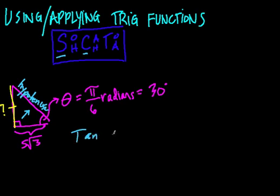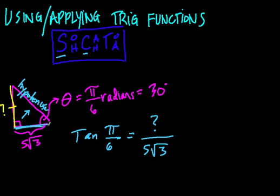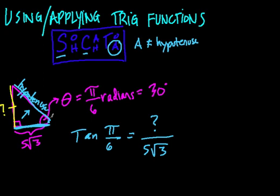We can write tangent as tan. We're finding the tangent of pi over 6 radians, which equals the opposite side — our mystery side — over our adjacent side, which is 5 times the square root of 3. Quick review: the adjacent side of an angle is one of the rays that make up the angle. We're not picking the hypotenuse because it's already set as the hypotenuse. When referring to the adjacent side in trig functions, adjacent does not equal the hypotenuse — that has its own special name.